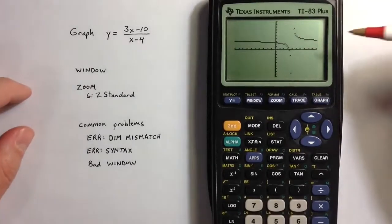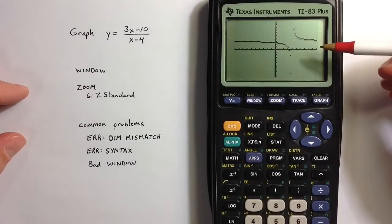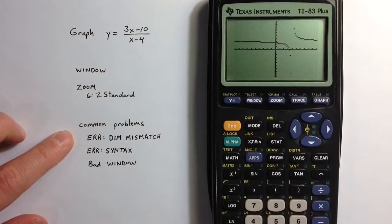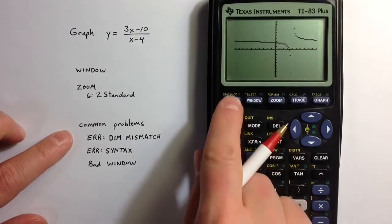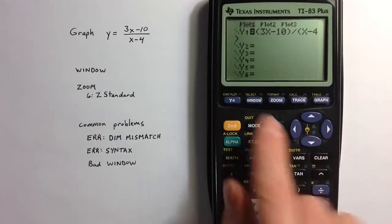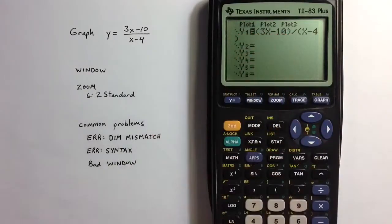So finally I want to look at a couple problems that can occur with graphing. A few common issues, if we go back to the y equals menu, one thing that can sometimes cause trouble is that a stat plot might be turned on.